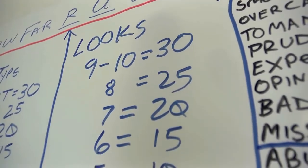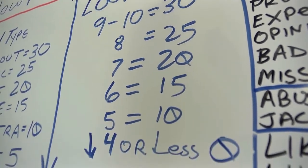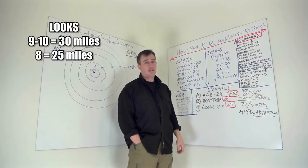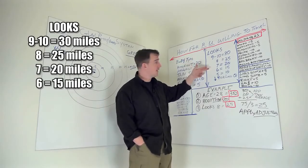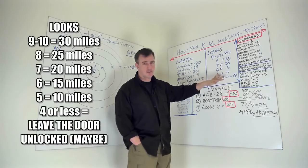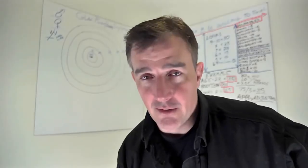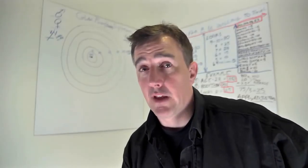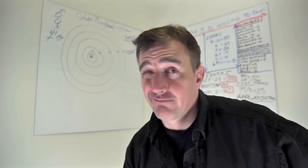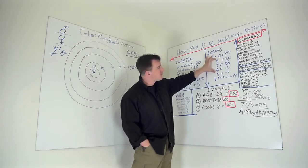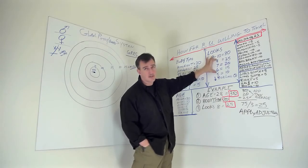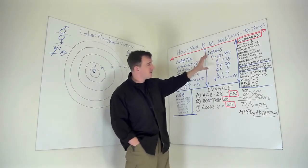Looks. 9 to 10, 30 miles all day long. Dang it. 8, 25. 7, 20. 6, 15. 5, 10. 4 less, 0. You're going to have to drive up to my screen door and probably have a bag over your head. I'm sorry. It's only fair. Pretty much 80% of the population fits between 8 and 6, depending on how you clean yourself up. So you're doing okay.